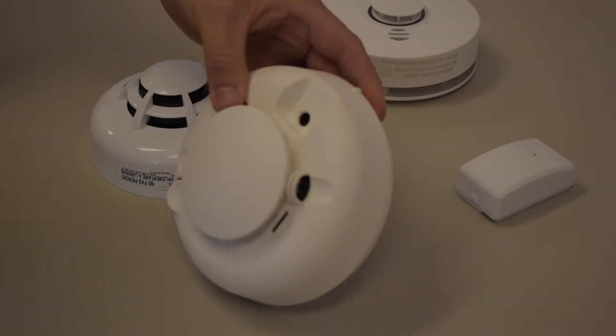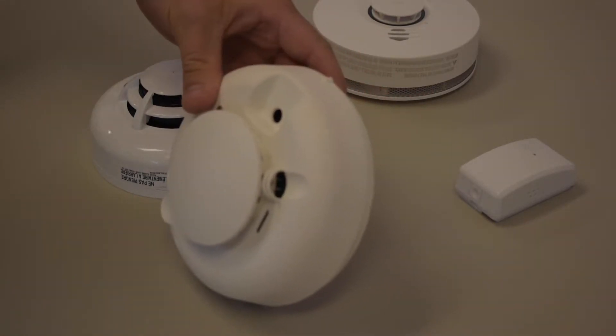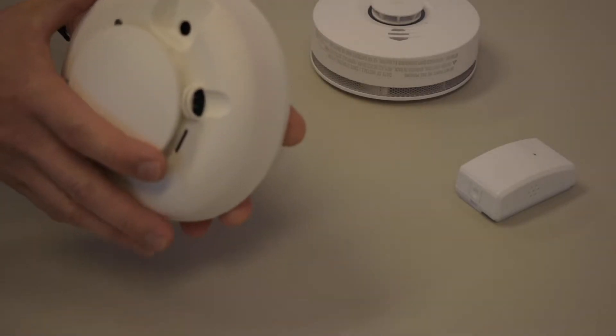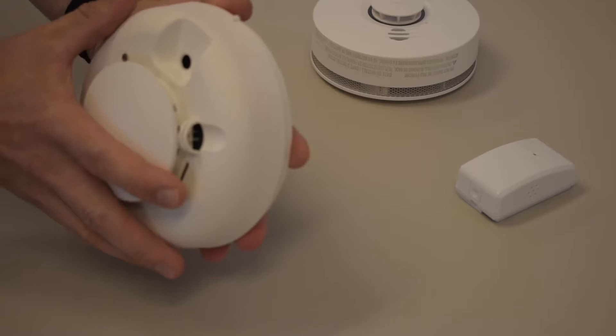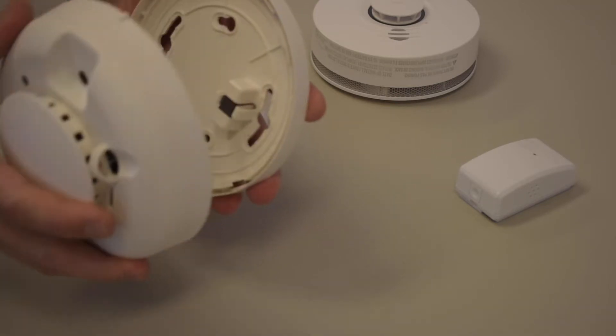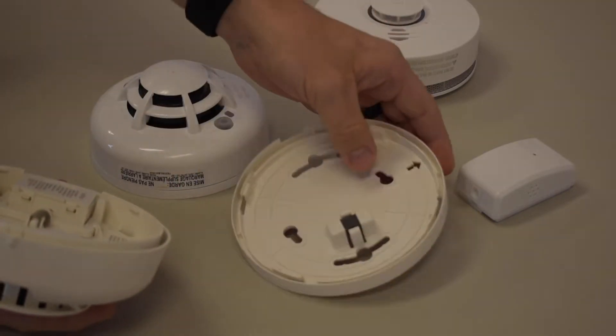When it comes to the older version of the Interlogix, also known as GE smoke detector, you will rotate counterclockwise. Keep that mounted to the wall.